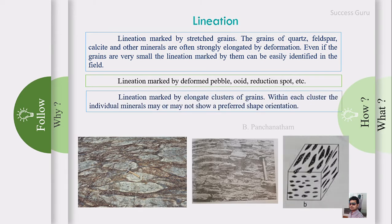The next stage is lineation marked by elongated clusters of grains. When external stress is prolonged and increasing, the grains join together and try to resist the stress. As a result, you can see deformed or elongated clusters of grains. Within each cluster, individuals may or may not show preferred orientation, but the group as a whole shows preferred orientation. This is the fourth stage, reached when stress increases and is prolonged.